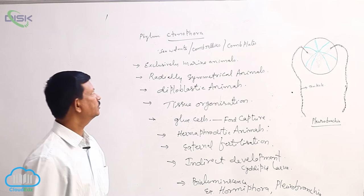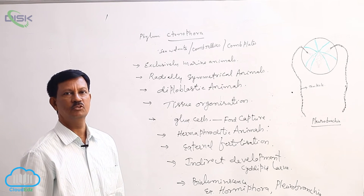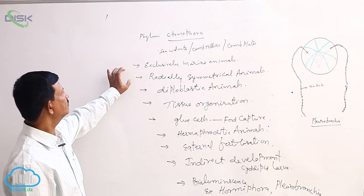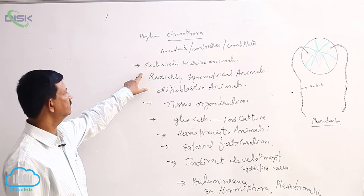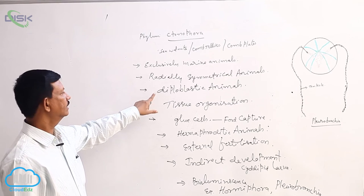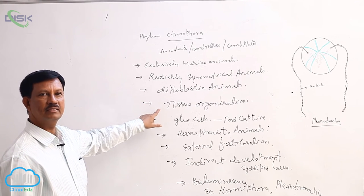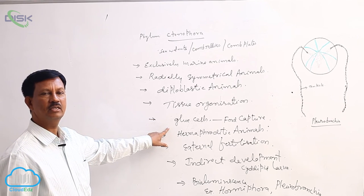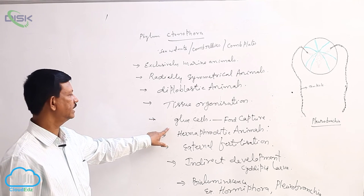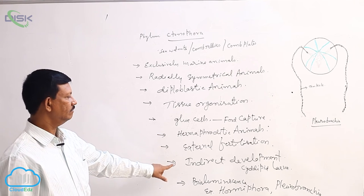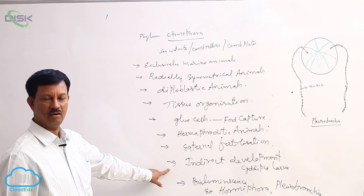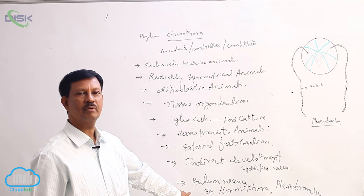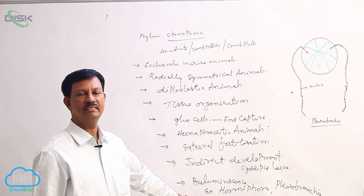These are the important characters of Phylum Ctenophora. To recollect: they are exclusively marine animals, radially symmetrical, diploblastic animals, with presence of tissue grade of organization. Special cells known as glue cells are present, useful for food capturing. Development includes the cydippid larva, and another important character is the presence of bioluminescence.